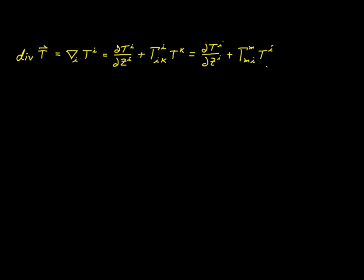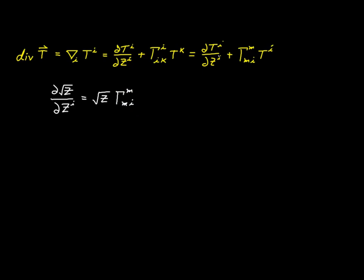In the previous video, we derived this expression for the partial derivative of the volume element with respect to z^i. You'll see that the Christoffel symbol gamma^m_mi term is the one we have right up there. We can solve for this explicitly just by dividing by our volume element. So gamma^m_mi would be equal to 1 over the square root of z times the partial derivative of our volume element with respect to z^i.